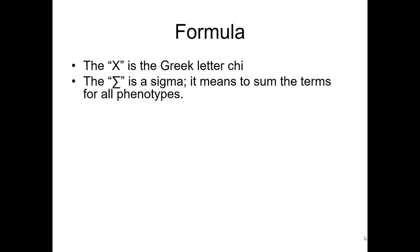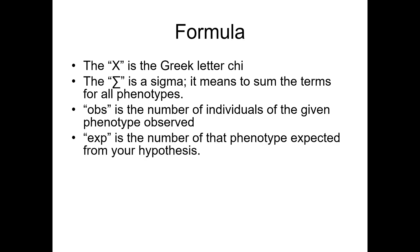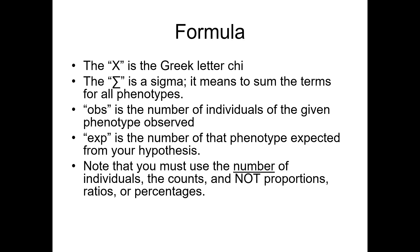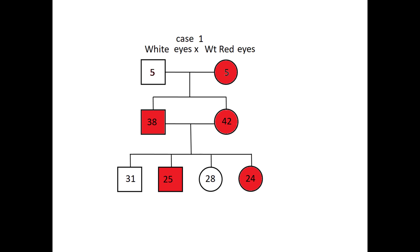Then, that little squiggle mark is the Greek letter sigma. It means to sum up the terms. So for every possible kind of phenotype, you're going to add that to the total. OBS is short for the number of observed individuals. And X is the number of expected offspring from your hypothesis. Now, this is important. You have to use the number of individuals, not the proportions or the percentages or the ratios. You have to use the number to get the correct results with this test.